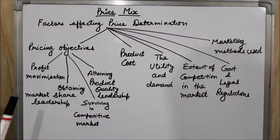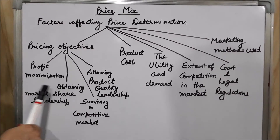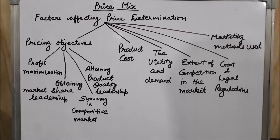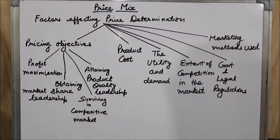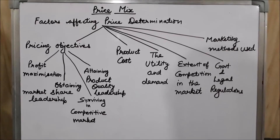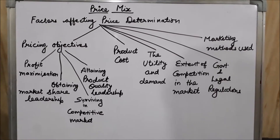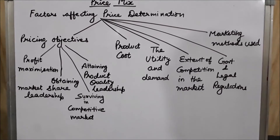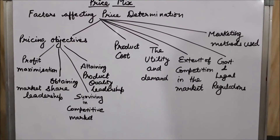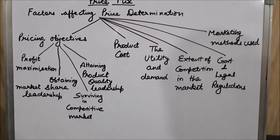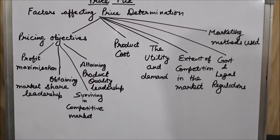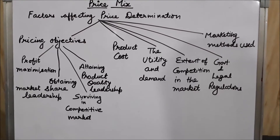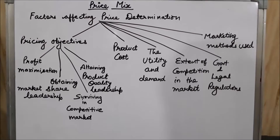The second pricing objective is obtaining market share leadership. If a firm's pricing objective is to cover maximum share of the market, then they have to keep a low price per unit to attract more and more customers and cover the maximum share of the market.